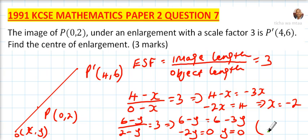This means that the center of enlargement is x is minus 2 and y is 0, which is (-2, 0). So the important thing to know is to get the enlargement scale factor, it is the length of the image divided by the length of the object. That is the most important point for you to be able to solve this question.